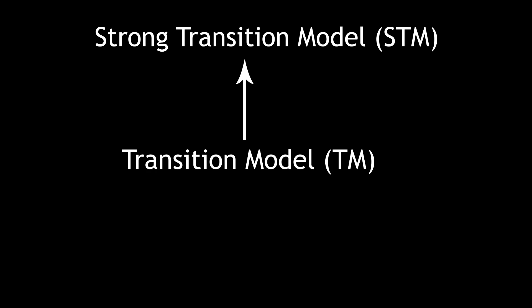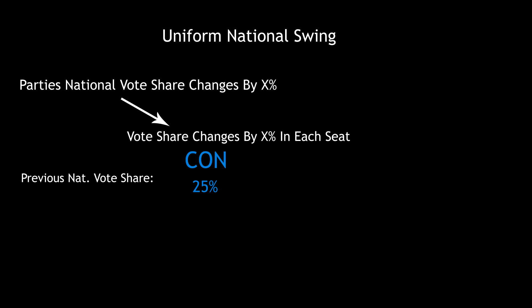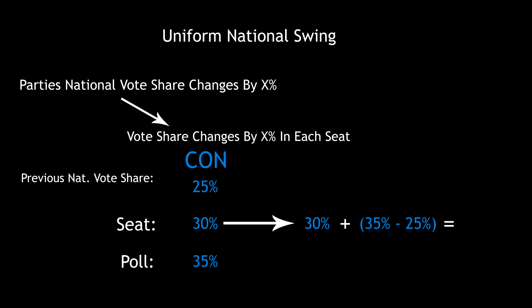This is where Electoral Calculus's strong transition model comes in. It builds upon the site's previous transition model, which is again an improvement of the uniform national swing model. The UNS works on the principle that if a party's vote share changes by a certain amount nationally, as predicted by an opinion poll, then it changes by the same amount in each seat. For example, if the Conservatives have a national vote share of 25% in the last election, and in a particular seat they have a vote share of 30%, and polling data predicts a national vote share of 35% in the next election, then we predict the new vote share in the seat is 30% plus the difference 35–25%, giving a new vote share of 40%. More rigorously, we let A be the predicted vote share for party I in seat K, C be the previous vote share for party I in seat K, P be the predicted national vote share from polling data for party I, and E be the previous national vote share for party I.